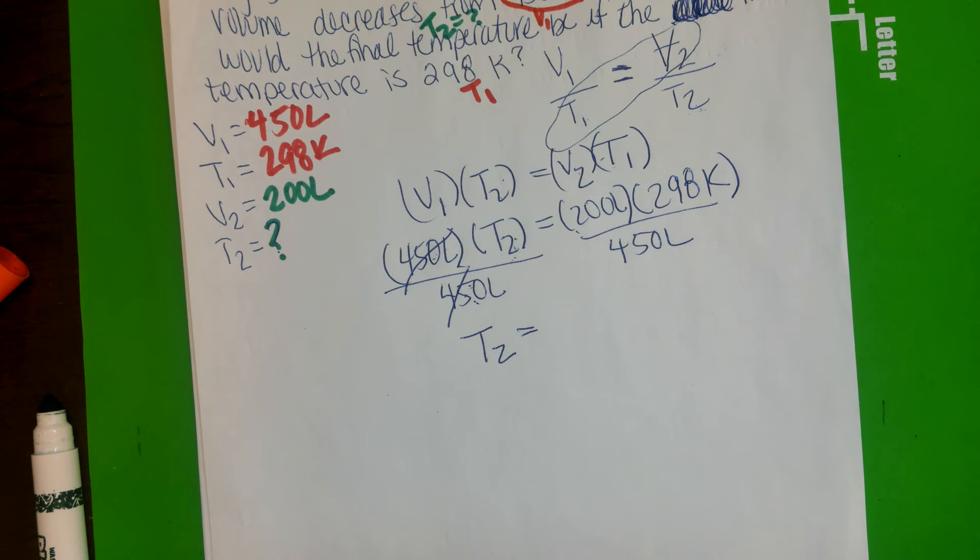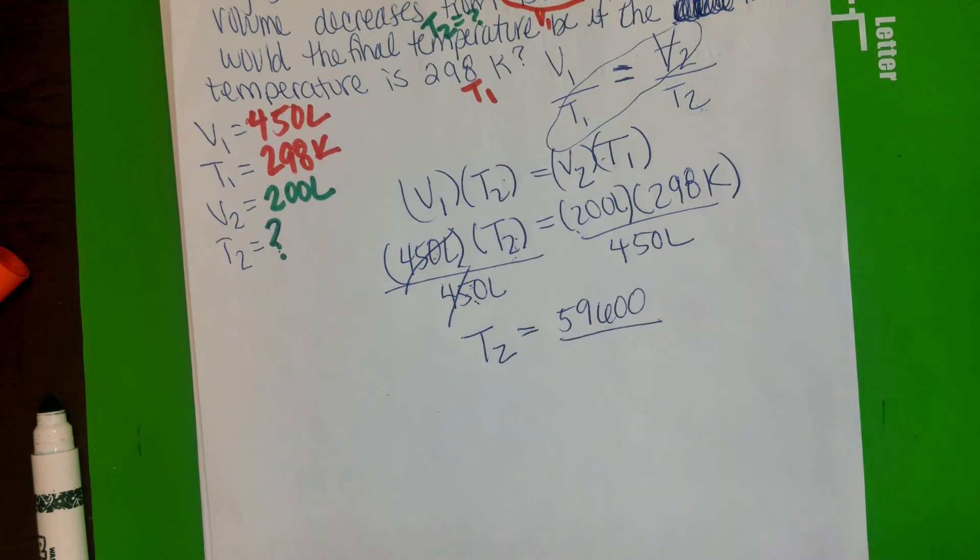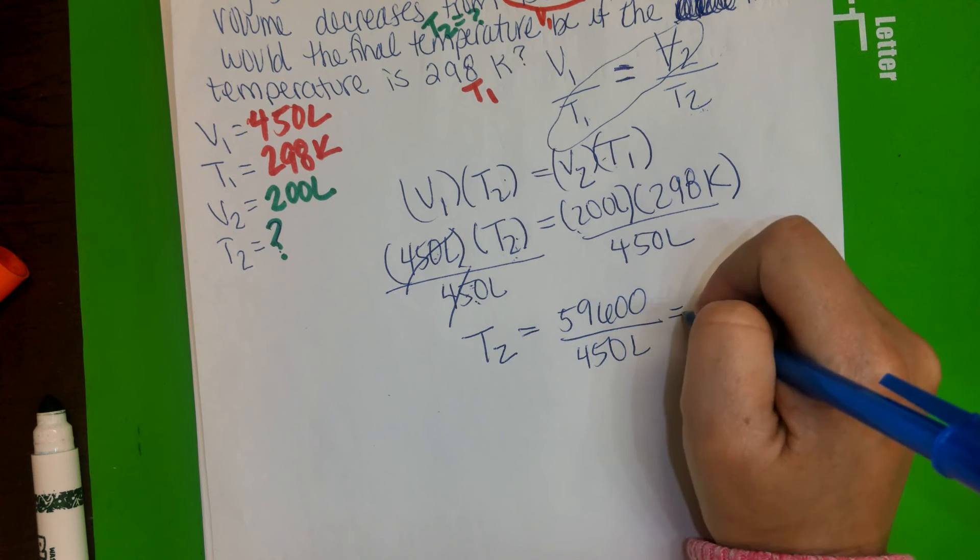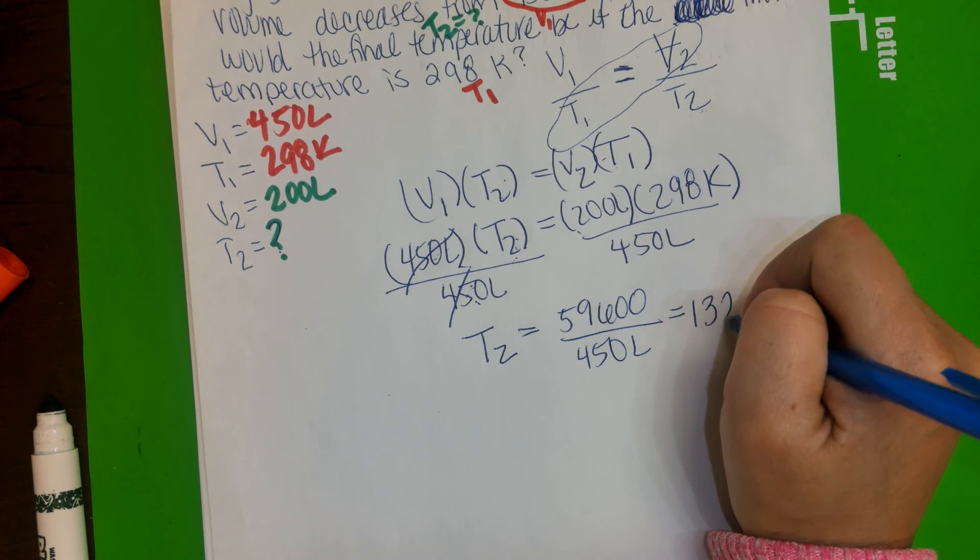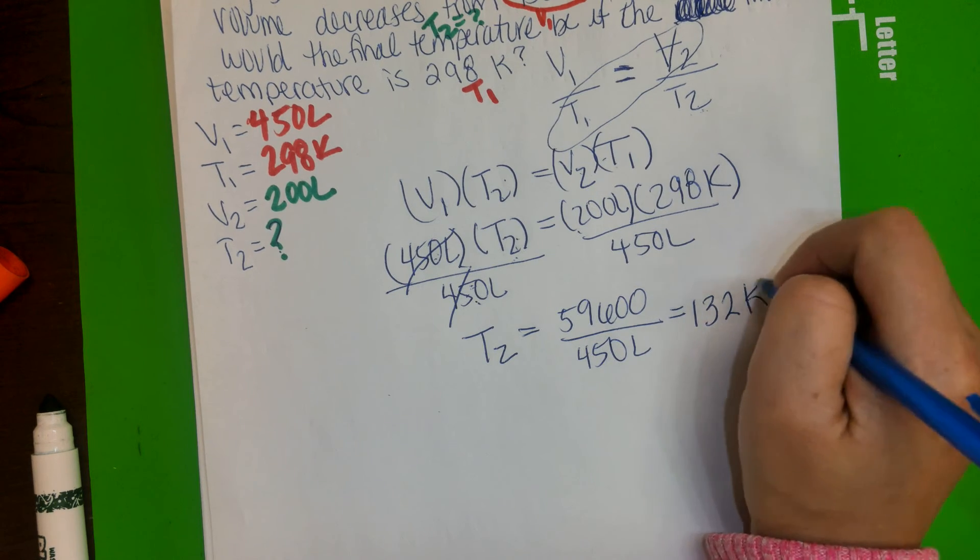Now, I know you have a calculator there, so just go ahead, multiply 200 times 298 equals, and that's a big number. Divided by 450 liters, and that should give you 132, and that is your Kelvin.